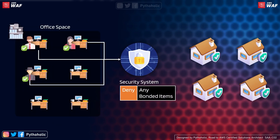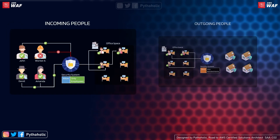Now it's time to leave the office. Everyone has to leave to their respective homes. But the office security will not allow you to take anything out other than your laptop and personal items. Office bonded warehouse items — like chairs and tables — cannot leave. We have a security system that blocks users from going out if they carry any bonded items.